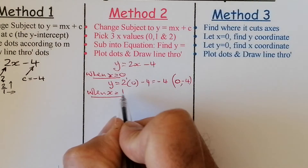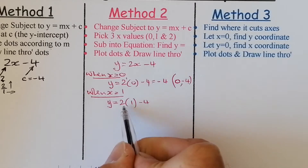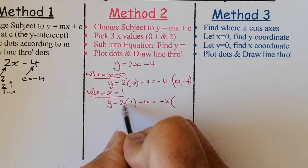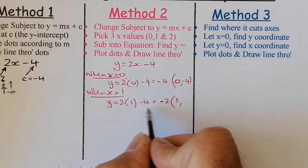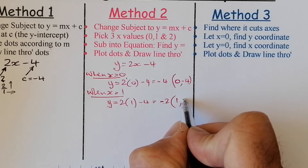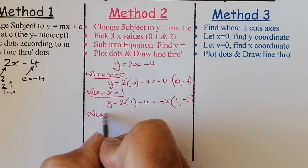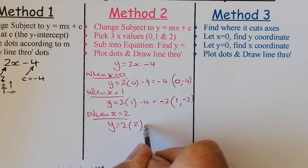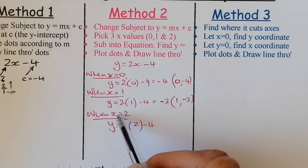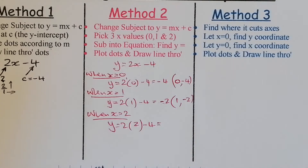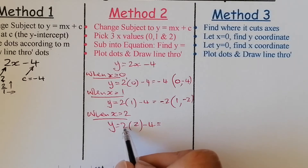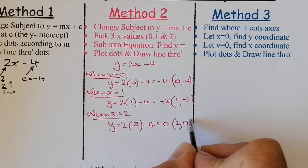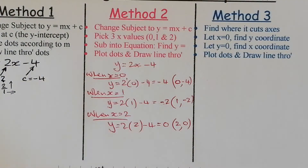When x equals 1: 2 times 1 is 2, take away 4 gives minus 2. So the point is (1, minus 2). When x equals 2: 2 times 2 is 4, take away 4 is 0. So that gives the coordinate (2, 0). I now have three points to plot. Going back to the graph: (0, minus 4), (1, minus 2), and (2, 0) — I plot each one and draw my straight line through them. That's Method 2.